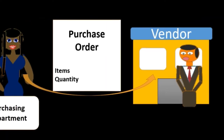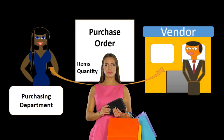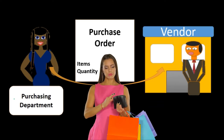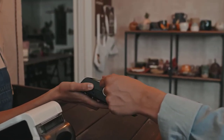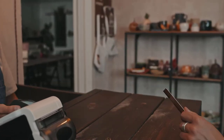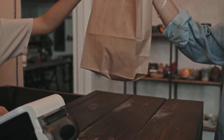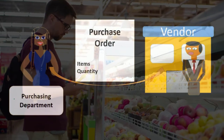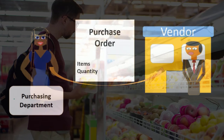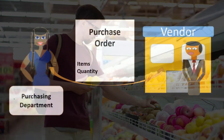The purchase requisition is an important part of internal controls. Internal controls can vary depending on the size of the organization, but within the purchasing process we do want to have some format of internal controls and an approval process, and the purchase requisition is part of that internal control process.